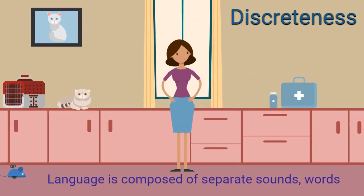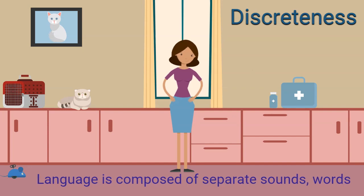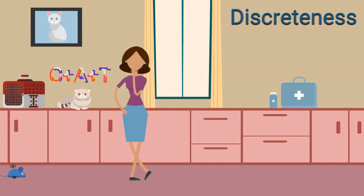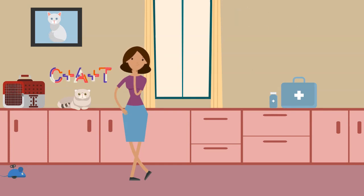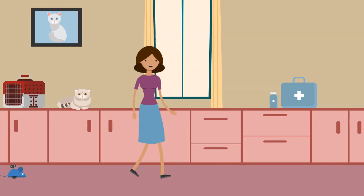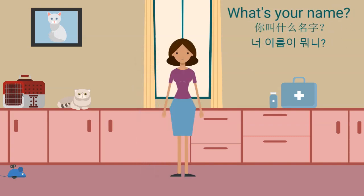The third property is discreteness. Language is composed of separate sounds and words that can be identified, combined, or recombined differently in each language. This is why we understand the language we know — we know how to separate the words. For example, the word 'cat' is composed of c-a-t. Another example: 'What's your name?' — you know that 'what' is a question word, 'is' is the verb, and 'your name' is a subject complement. But if you don't understand Chinese or Korean, it's hard to separate those languages into smaller units.